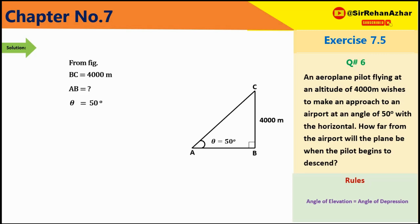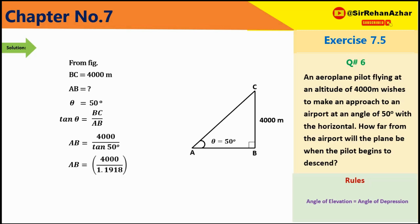Theta के respect BC है perpendicular और AB है base। Tangent of theta = BC/AB। AB = 4000 / tan 50° = 4000 / 1.1918 = 3356.4 meter। जहाज airport से 3356.4 meter की दूरी पर होगा जब pilot उतारना शुरू करे।